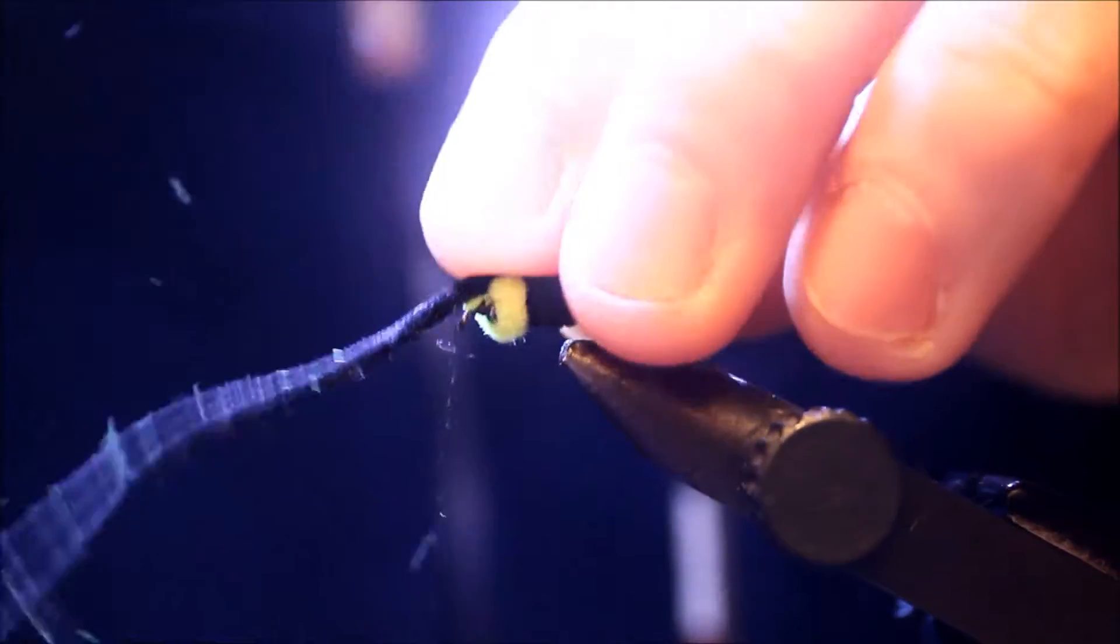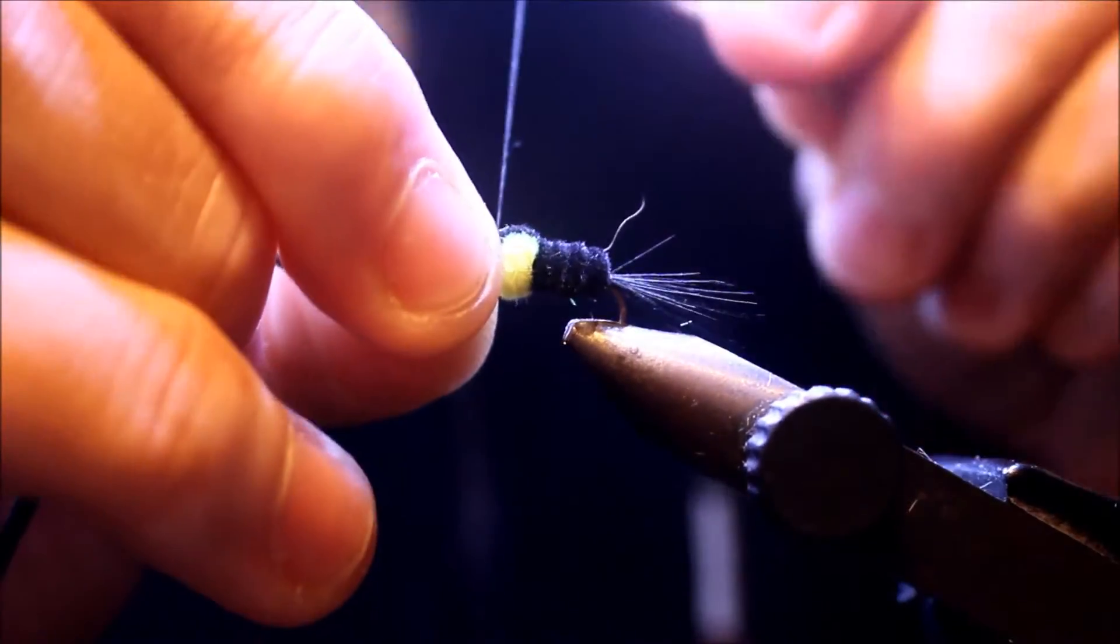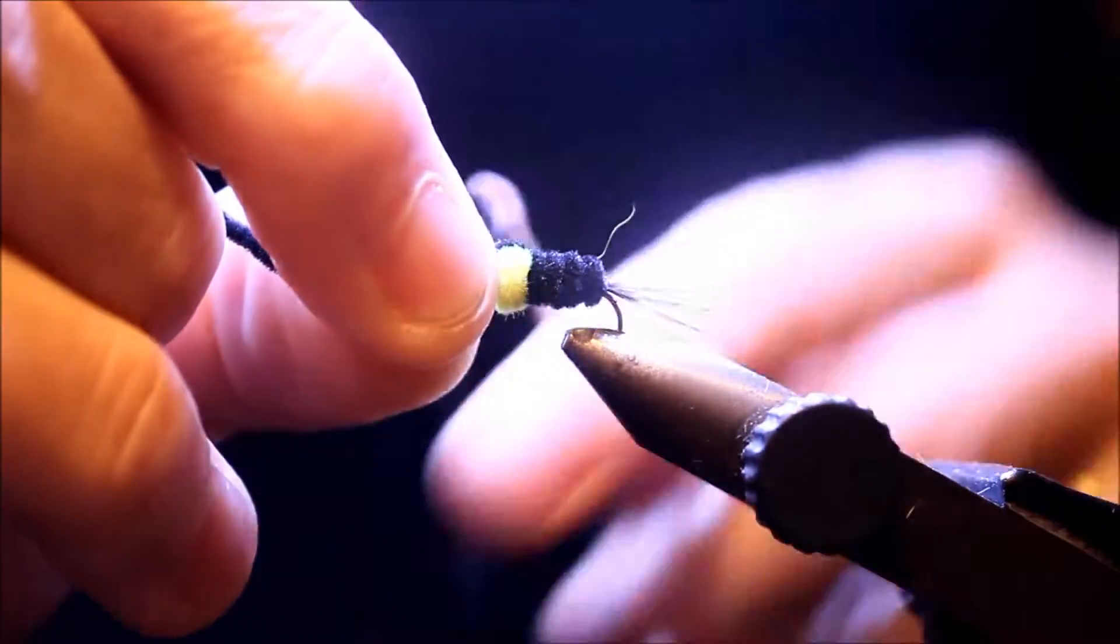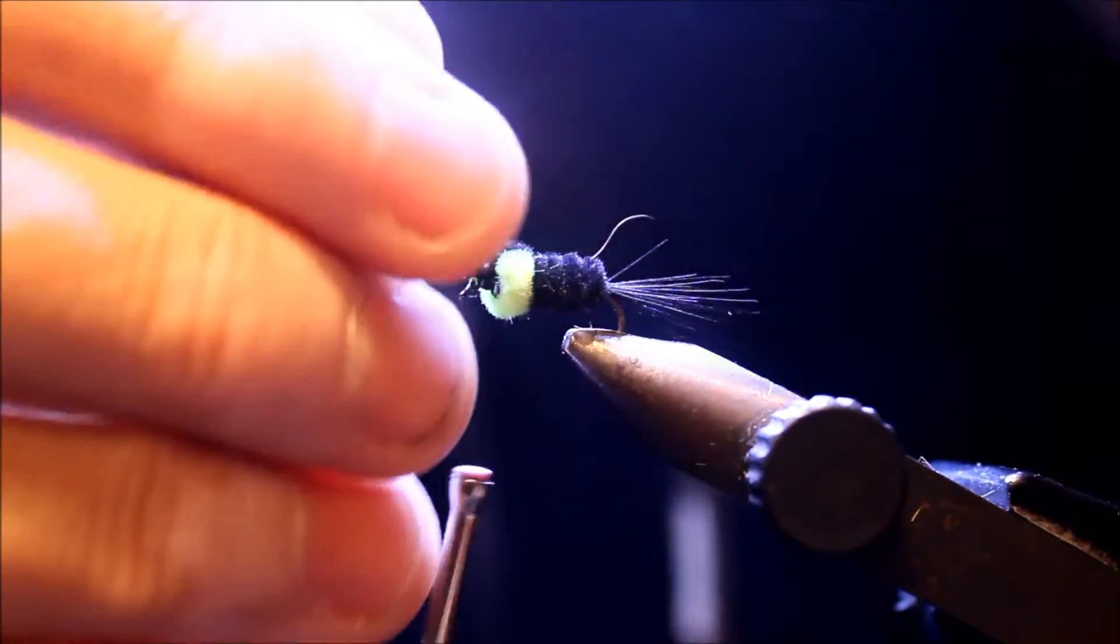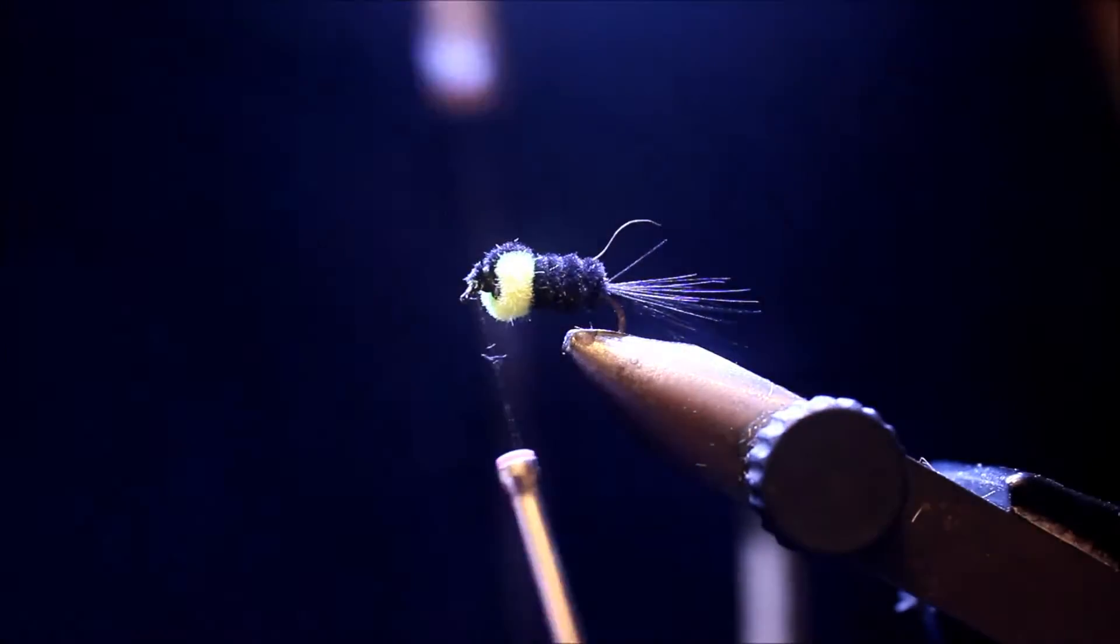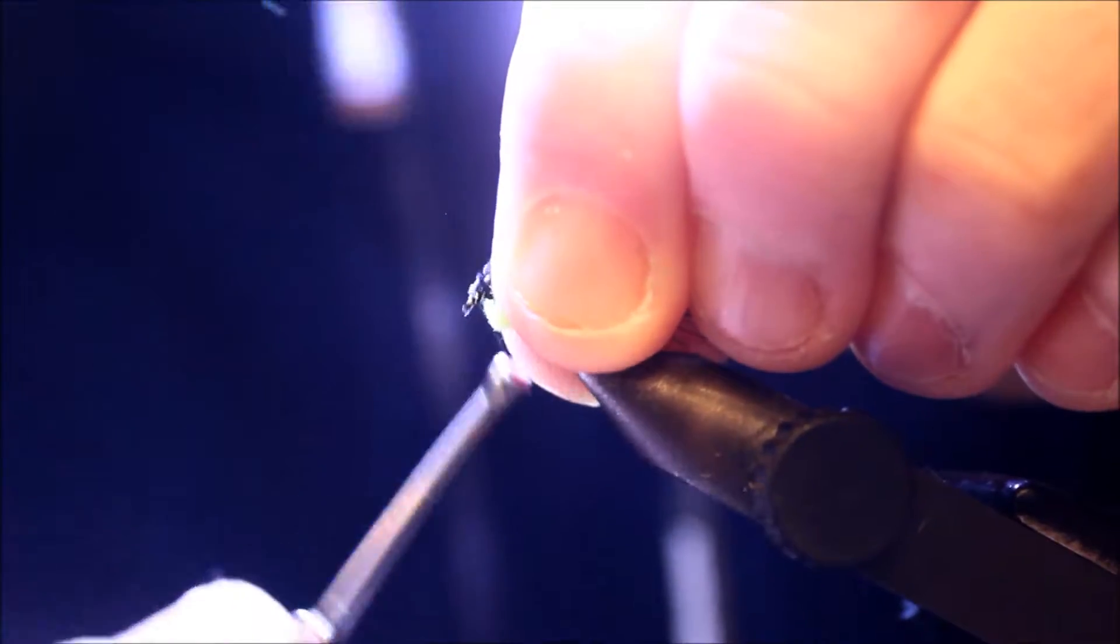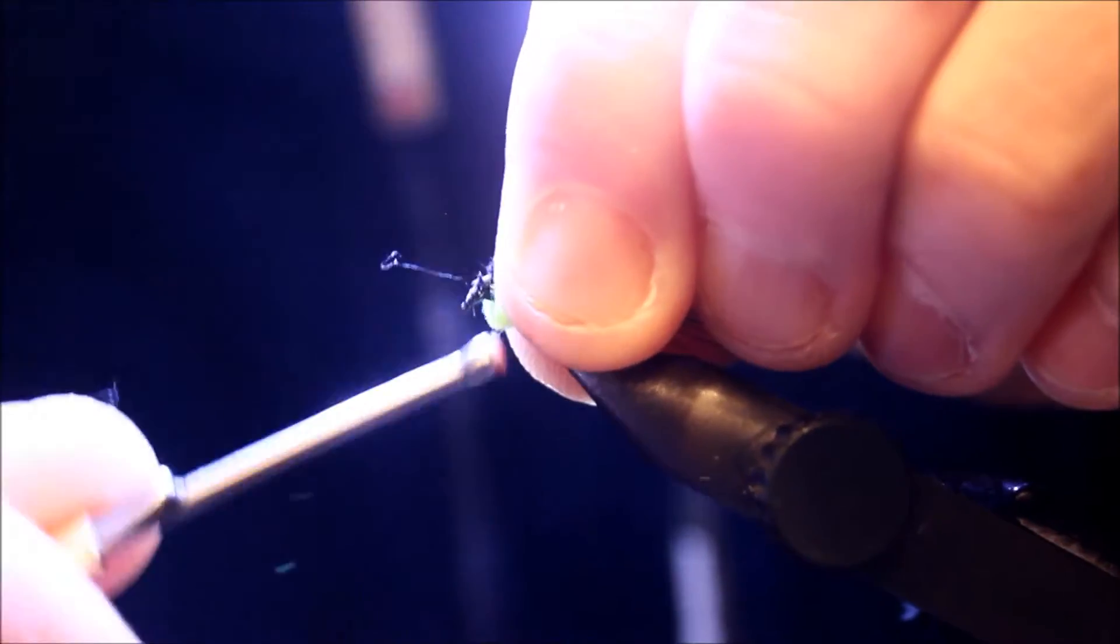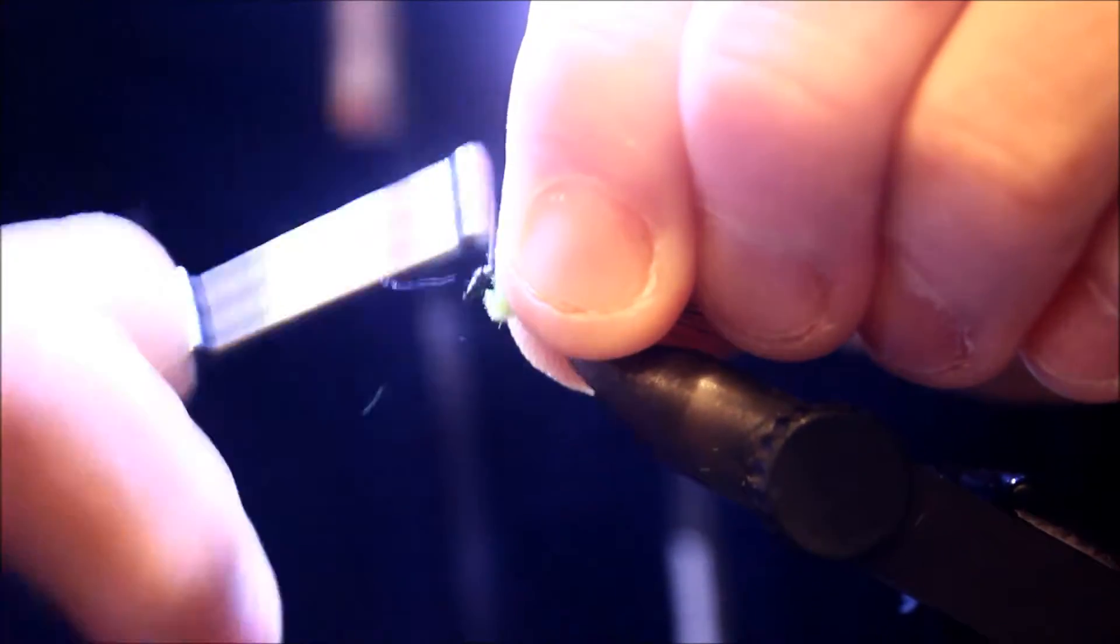Ensuite je rabats simplement ma chenille noire dessus. Je la bloque, quelques tours devant. Je coupe l'excédent et je vais venir former ma tête simplement en épaississant le fil.